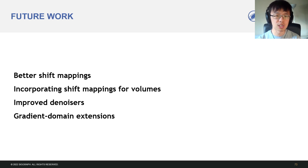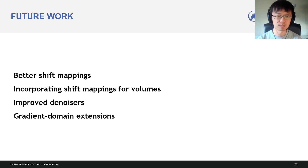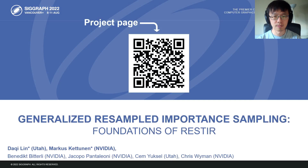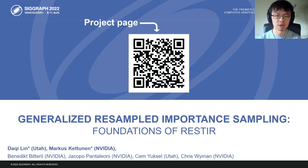It would also be great to experiment with designing denoisers for ReSTIR's correlated samples. We also expect our findings to lead to further improvements in gradient domain rendering. And that's our presentation. The paper, video, and code are available on the project page through the QR code. Thank you for listening.